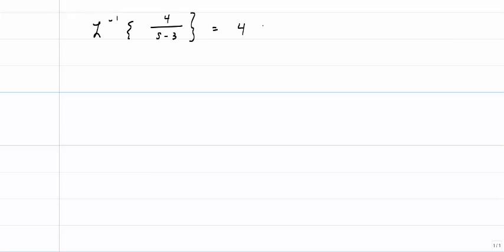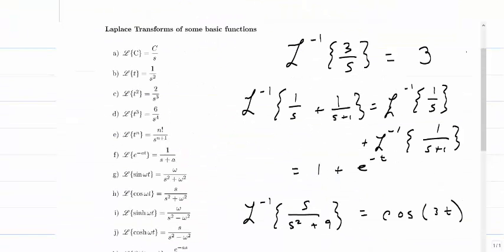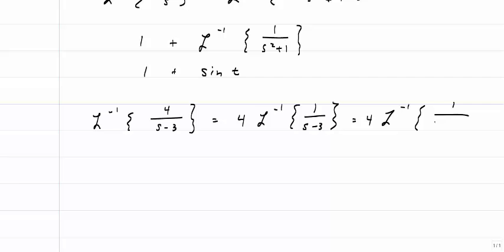Let's do more examples. Using the linearity property, we can pull out the 4. Going back to the Laplace transform table, the inverse Laplace of 1 over (s + a) is e to the negative at. To match the table form, if a equals negative 3, then this becomes e to the negative(negative 3)t, or 4e to the 3t.